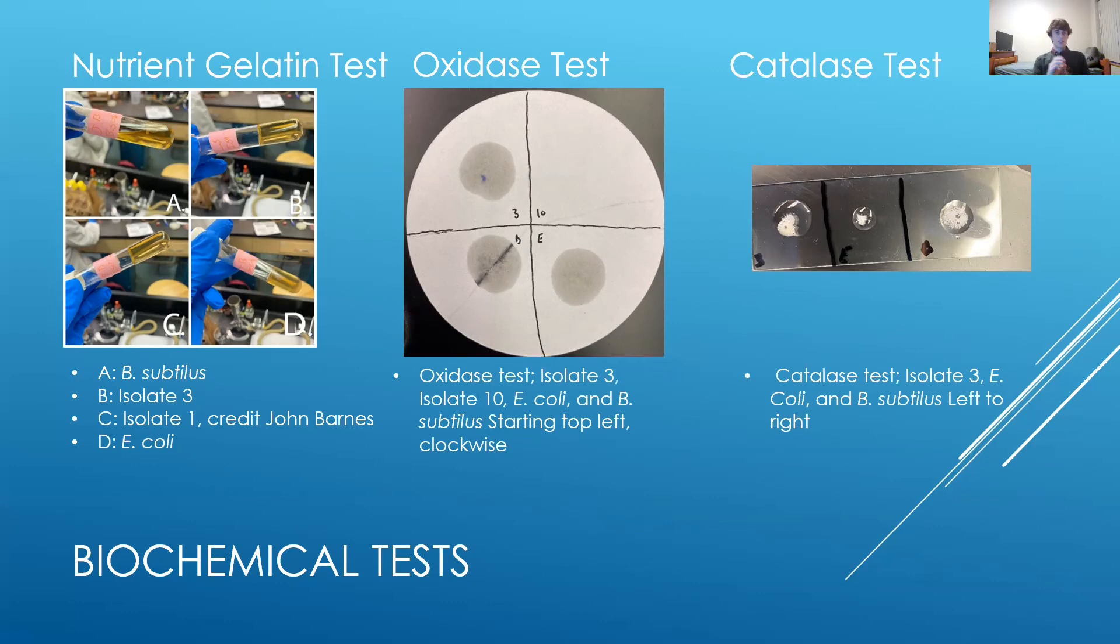The oxidase test tested two isolates, E. coli and B. subtilis, to see if they had cytochrome c oxidase. Finally, the same four bacteria were used in the catalase test, where hydrogen peroxide was dripped onto all four of them. The only bacteria that tested positive for the nutrient gelatin test, which means it produced gelatinase, was B. subtilis. The other three bacteria, isolates 1, 3, and E. coli, did not produce gelatinase.